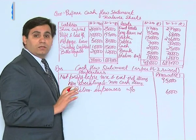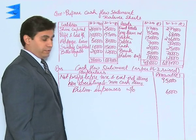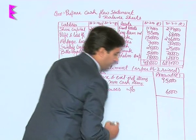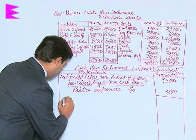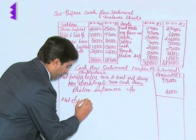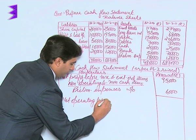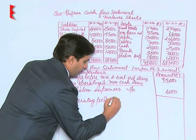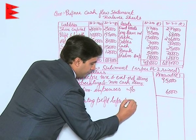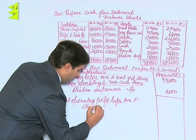Besides this, there are no other non-operating non-cash items in this question. We will add it back and we will get net operating profit before tax and changes in working capital.